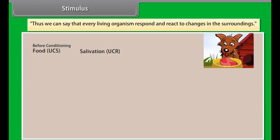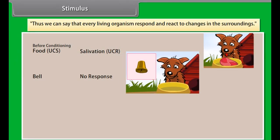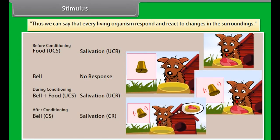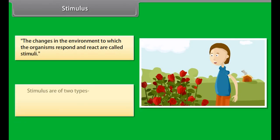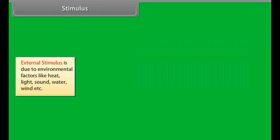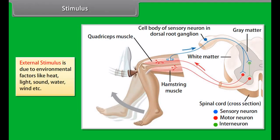Every living organism responds and reacts to changes in its surroundings. The changes in the environment to which organisms respond and react are called stimuli. Stimuli are of two types: external stimulus and internal stimulus. External stimulus is due to environmental factors like heat, light, sound, water, wind, etc. Internal stimulus occurs within the organism and may be due to hormones, acids, enzymes, etc. present within the organism.